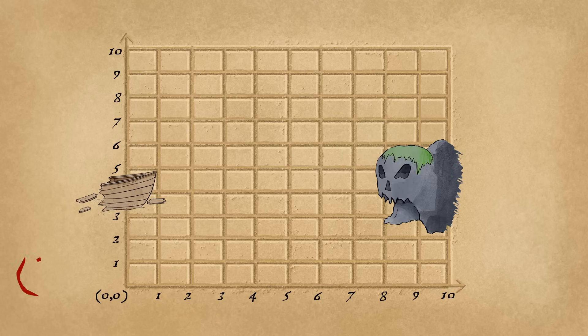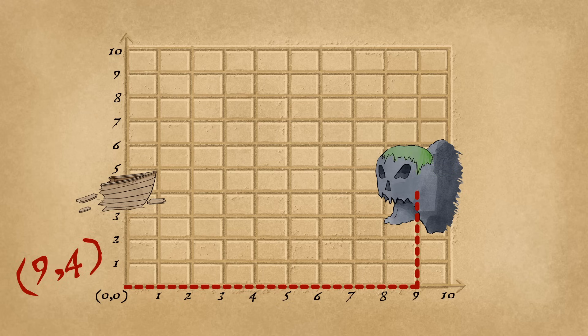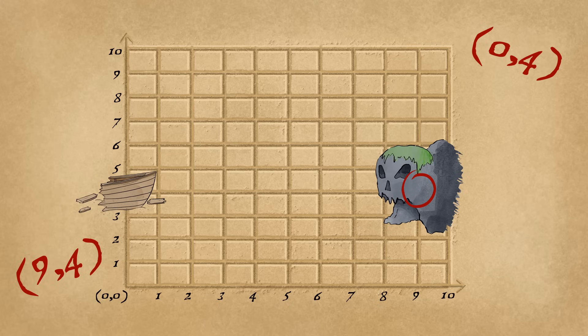To plot the coordinates nine, four: go right nine, up four — now one more. With the ordered pair zero, four: remain at the origin, count four from the floor.